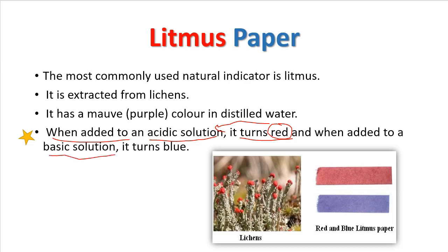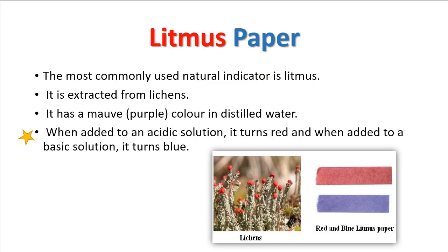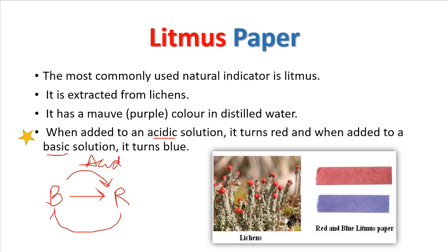This is the key property of litmus paper: when added to an acidic solution it turns red, and when added to a basic solution it turns blue. This is the most commonly used natural indicator and is also available in solution form. It is extracted from lichens, which are made by the symbiotic process of algae and fungi. Remember: blue turns red by acid, and red turns blue by base.